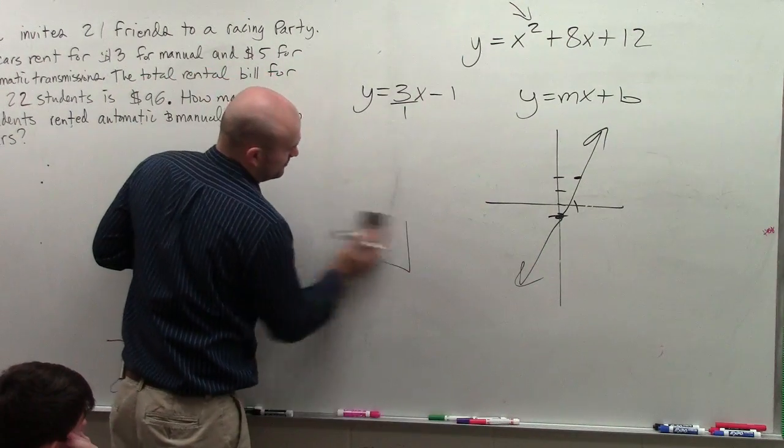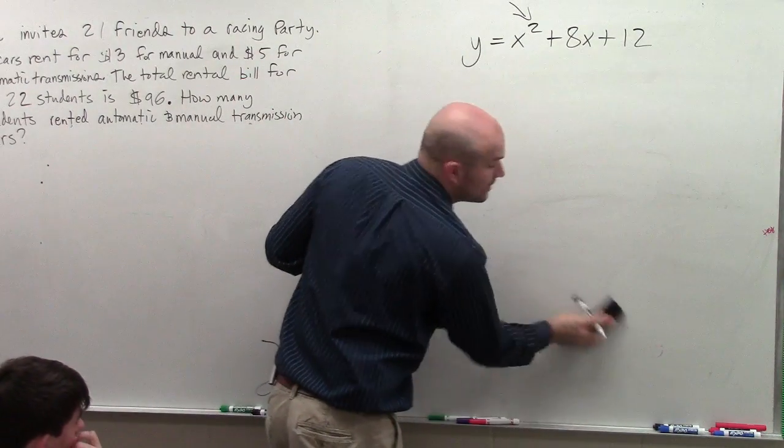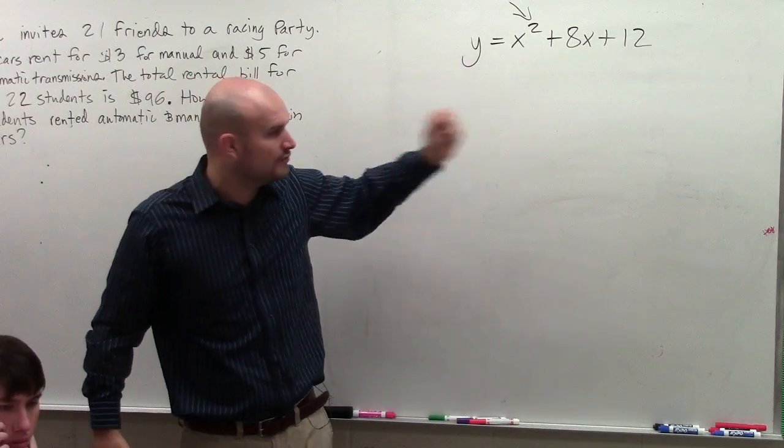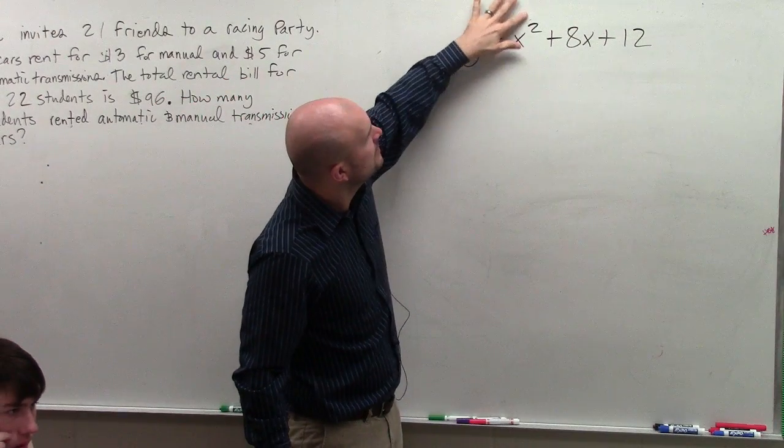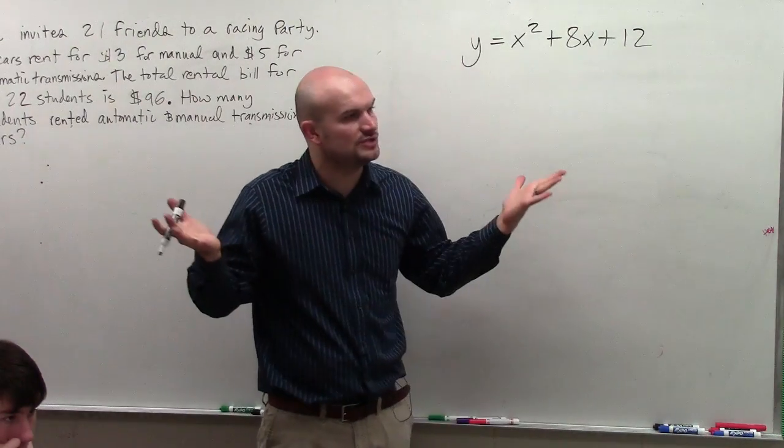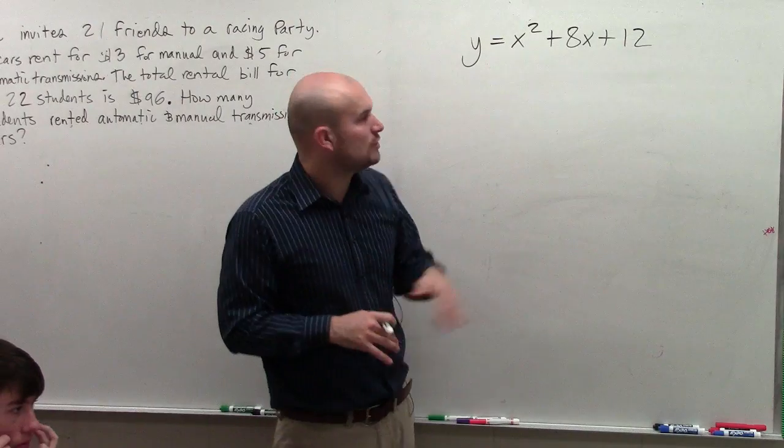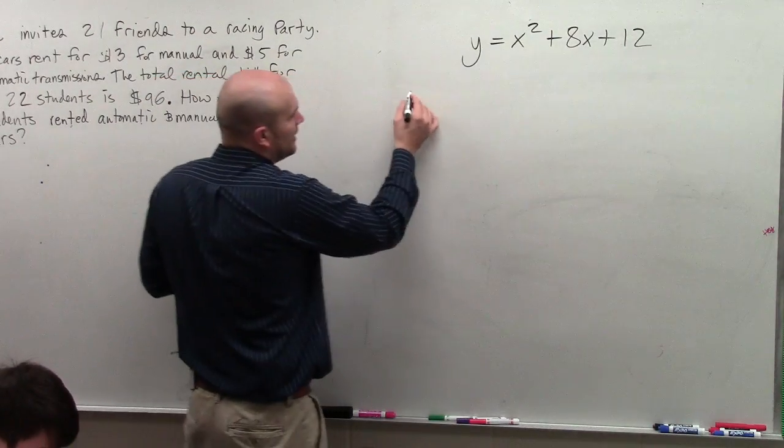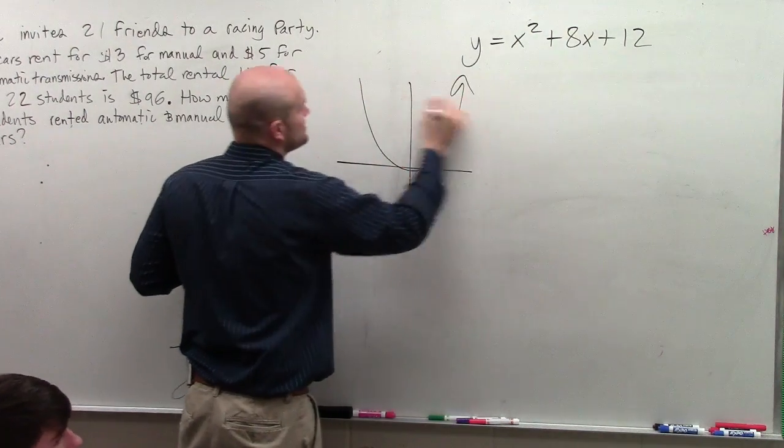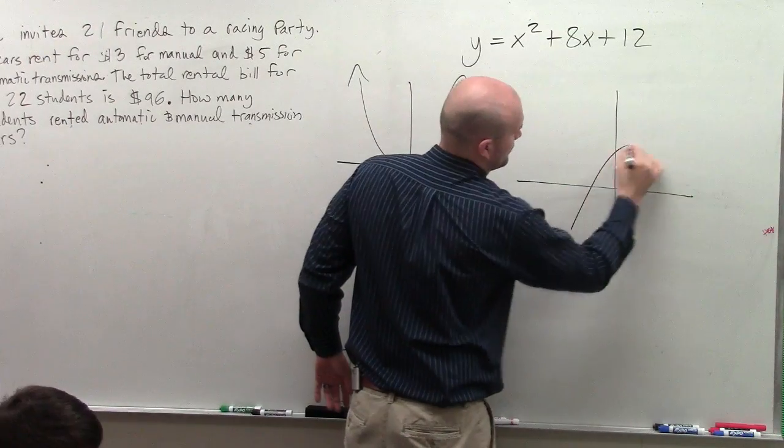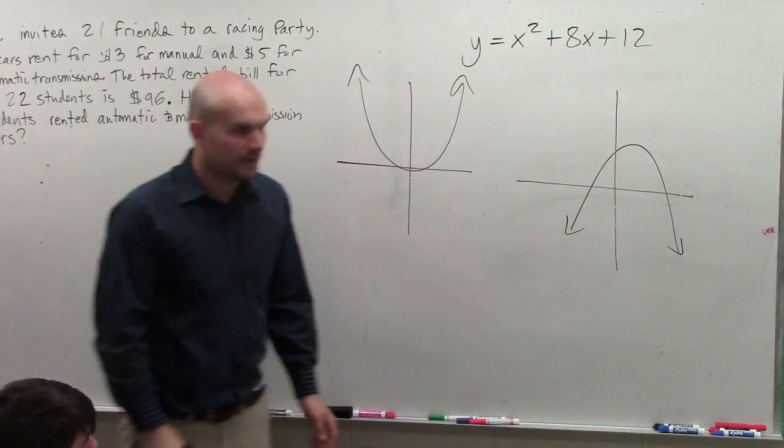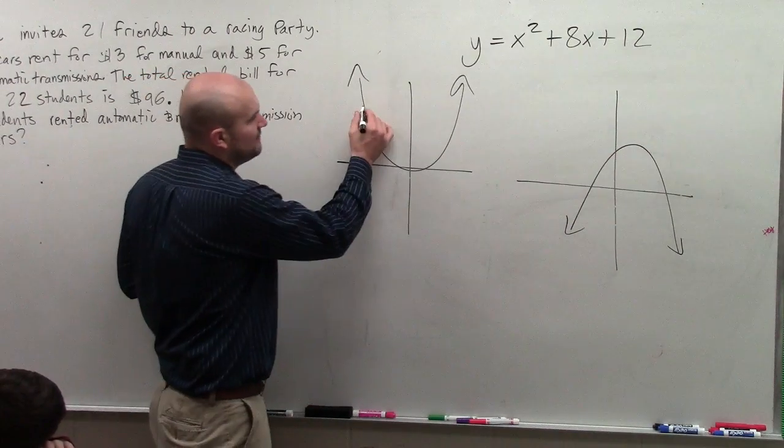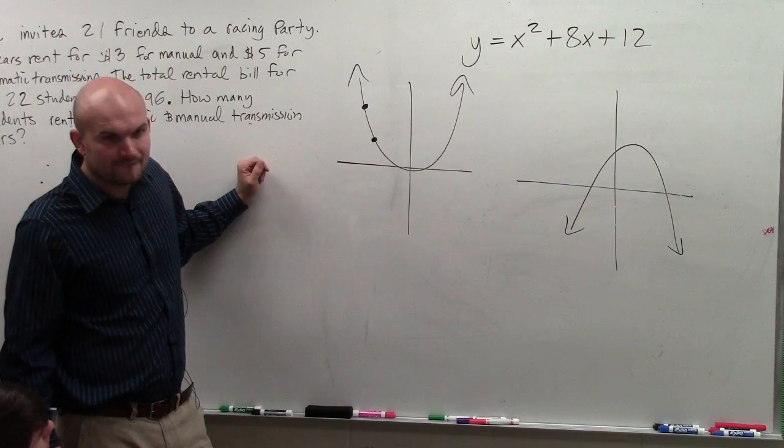Now, for a quadratic, the shape of the quadratic is not like a line. It is what we call a parabola. A lot of times, you can just relate it to a U. So, the reason why I show you guys some examples of what a parabola looks like is because if you just pick two points, does that tell you what the graph looks like? No, it doesn't.